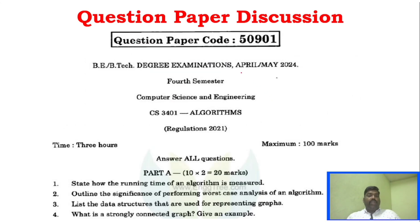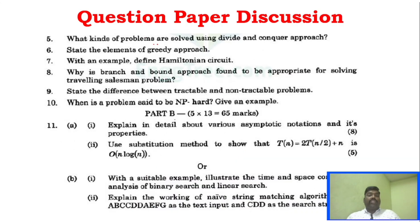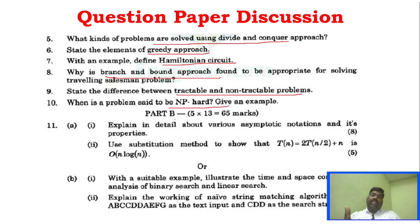Now we will see the April-May 2024 question paper, a very recent paper. The two-mark direct questions include: running time of an algorithm, significance of performing worst-case analysis, data structures used for representing graphs, strongly connected graph, kinds of problems solved by divide and conquer approach, greedy approach, Hamilton circuit, branch and bound approach, tractable, non-tractable, and NP-hard.